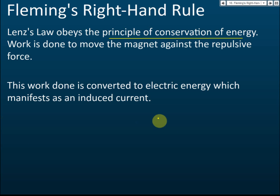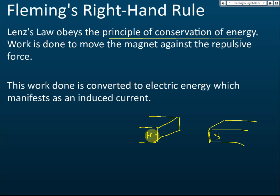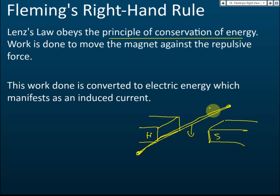Let's look at an example. If we have a magnetic field with a north pole and a south pole, and we have a conductor, we move this conductor downward to cut the magnetic field. What energy is involved? The energy possessed by this conductor is kinetic energy.